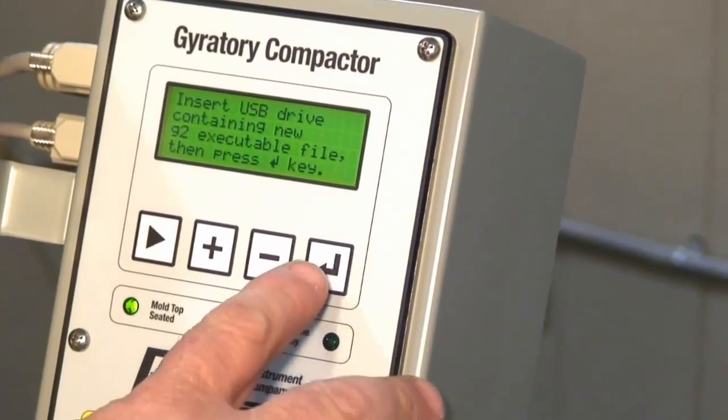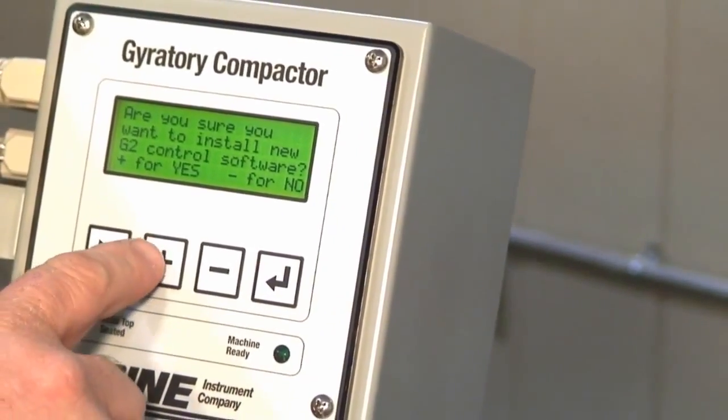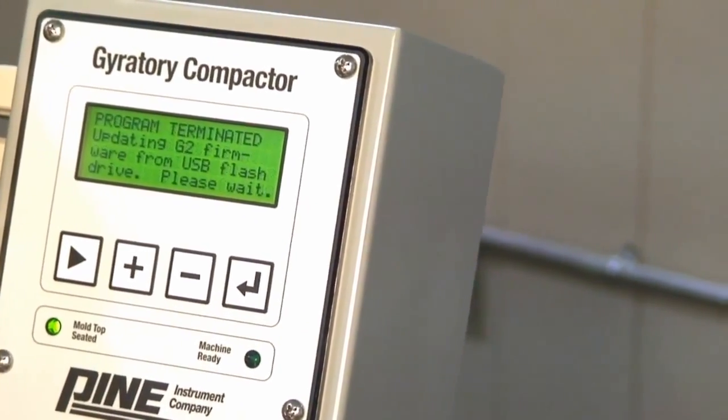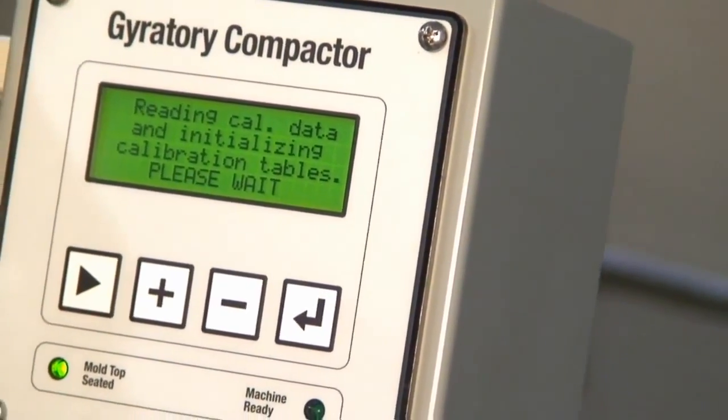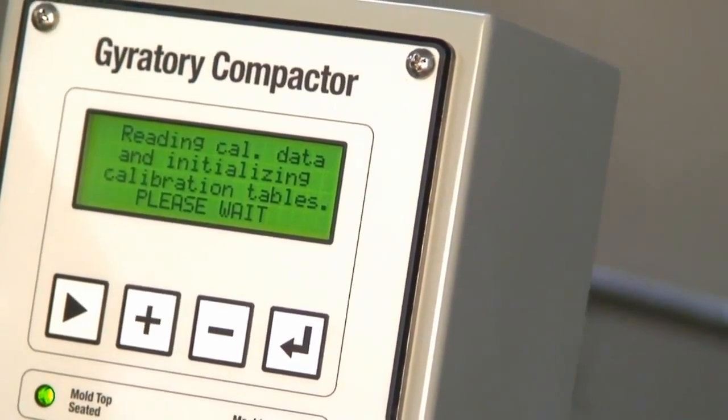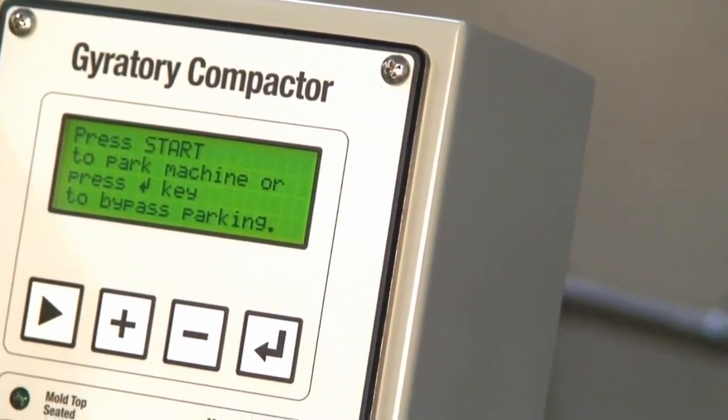Now the machine will terminate and load the new software. Once the machine starts back up, it'll show the new control version. And you can press the Start key to park the machine.